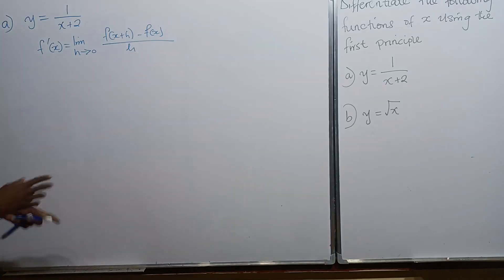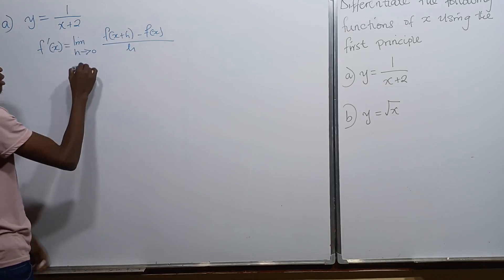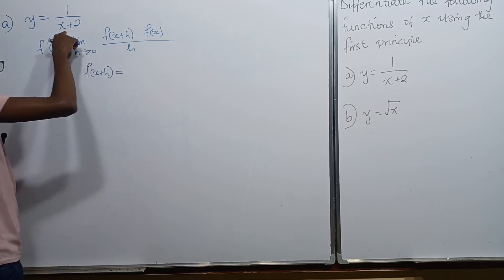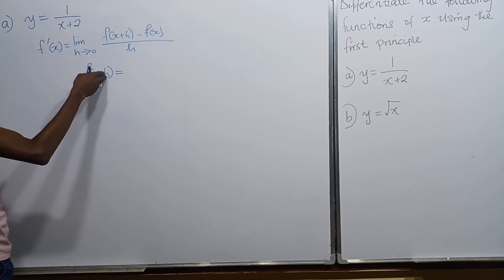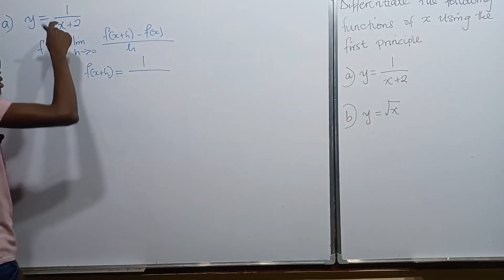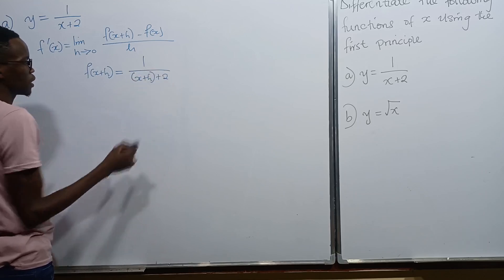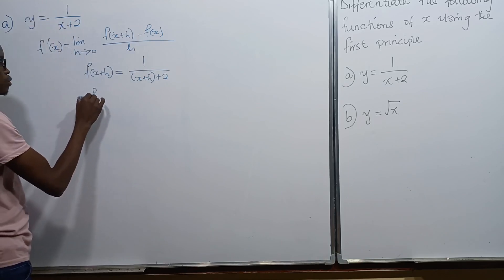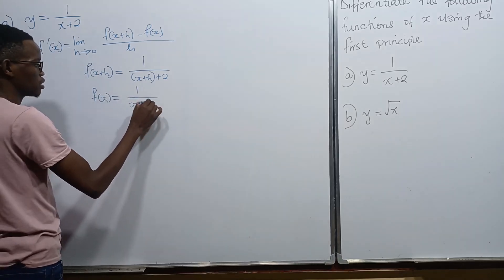We need to determine what our f of x plus h is from this function. So f of x plus h — everywhere where there's x, we put x plus h — meaning this becomes 1 over x plus h, plus 2. And f of x is just the function as it is: 1 divided by x plus 2.